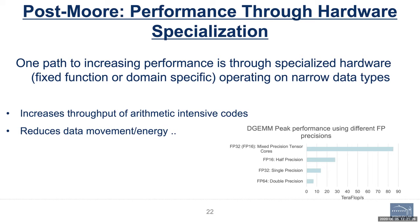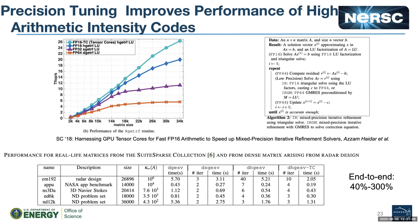By using narrow data types, you reduce data movement energy and also indirectly increase performance. Specialized hardware is already here — the best example is nodes that have tensor cores. This graph shows the performance promise: the first three lines show DGEMM performance if you execute it on the GPU, while the top line shows DGEMM performance if you execute it on the tensor cores — much higher — because they use narrow data types and the architecture does 4x4 matrix multiplies in parallel.